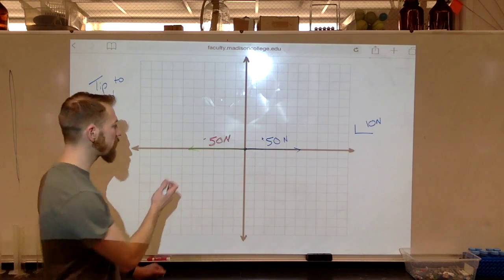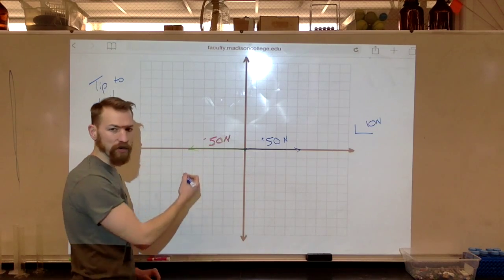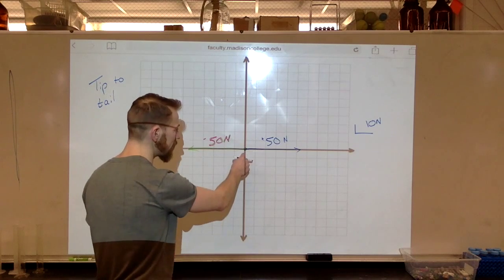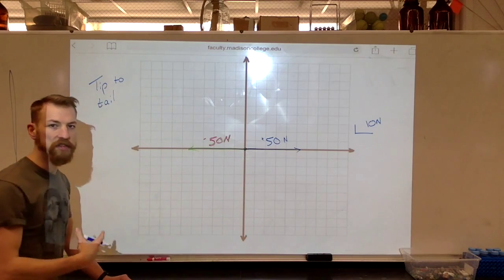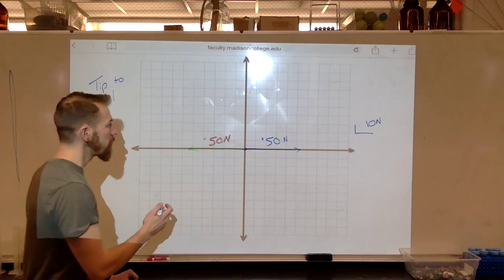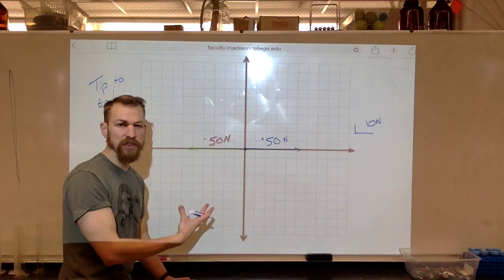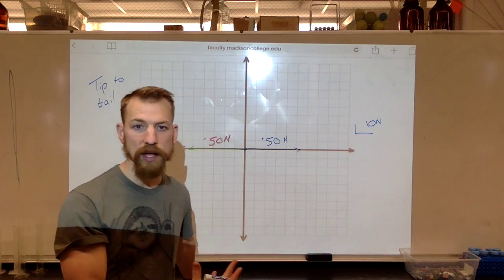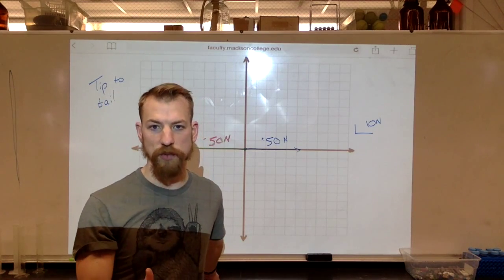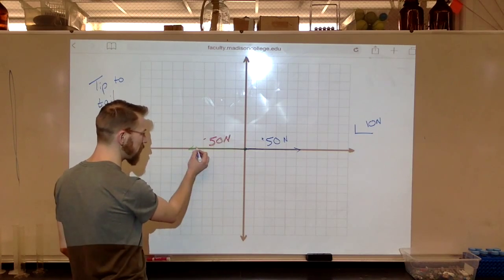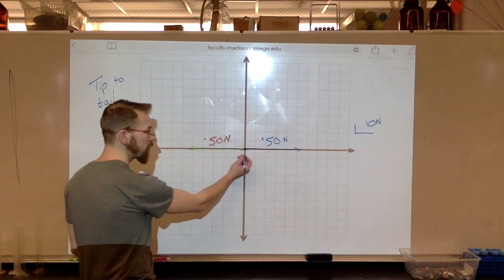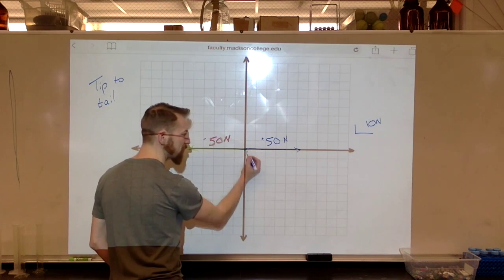And we'll be doing this a little bit in class. But just know that this end, the end with the arrow, is the tip of the vector, right? And this end where the vector begins is called the tail of a vector. Vectors, the only two things that matter are the direction and the magnitude. So everything else we can change.